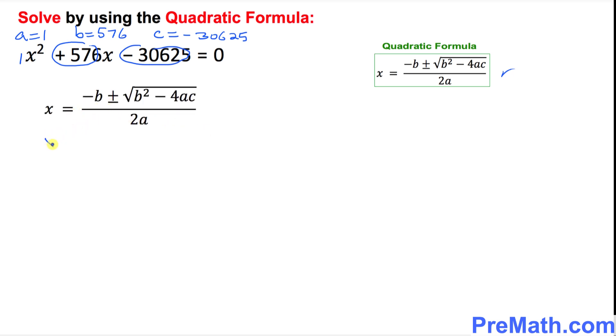So x equals to minus b is 576 plus or minus square root of b is 576 squared minus 4 times a is 1 and c is negative 30625. Everything is divided by 2 times a is 1.